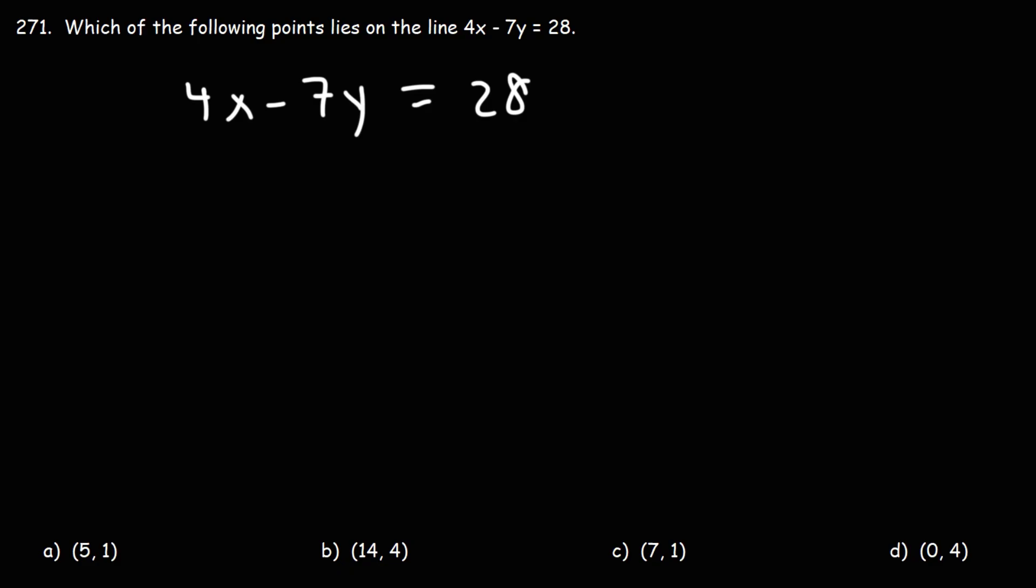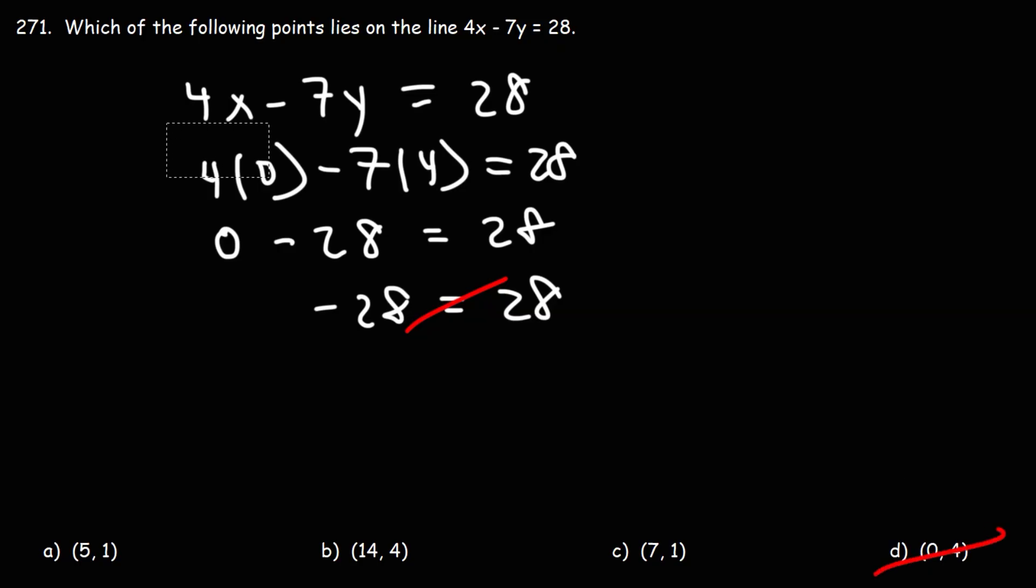Let's start with answer choice D. So x is 0, y is 4. 4 times 0 is 0, 7 times 4 is 28, but we have a negative sign in front of it. So it's negative 28. Negative 28 does not equal 28, so D is not the answer.